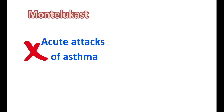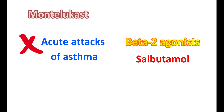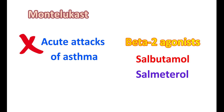For acute attacks of asthma and bronchoconstriction, Montelukast cannot relieve symptoms. For such purposes, beta-2 agonists like salbutamol or salmeterol can be given. These medications are called bronchodilators and can directly produce relaxation of bronchial smooth muscle. Therefore, for acute attacks of asthma, beta-2 agonists should be used, where Montelukast is not effective.